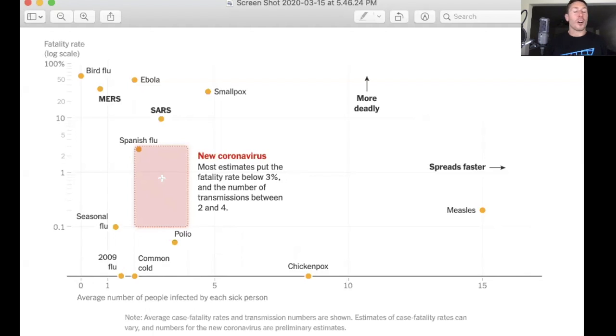It's more virulent and also appears to be more infective. So infectivity, which is also called R0 or R-naught, is on the x-axis. And as you can see on the x-axis in this graph, this is an average of the number of people that someone with coronavirus or any virus will infect.